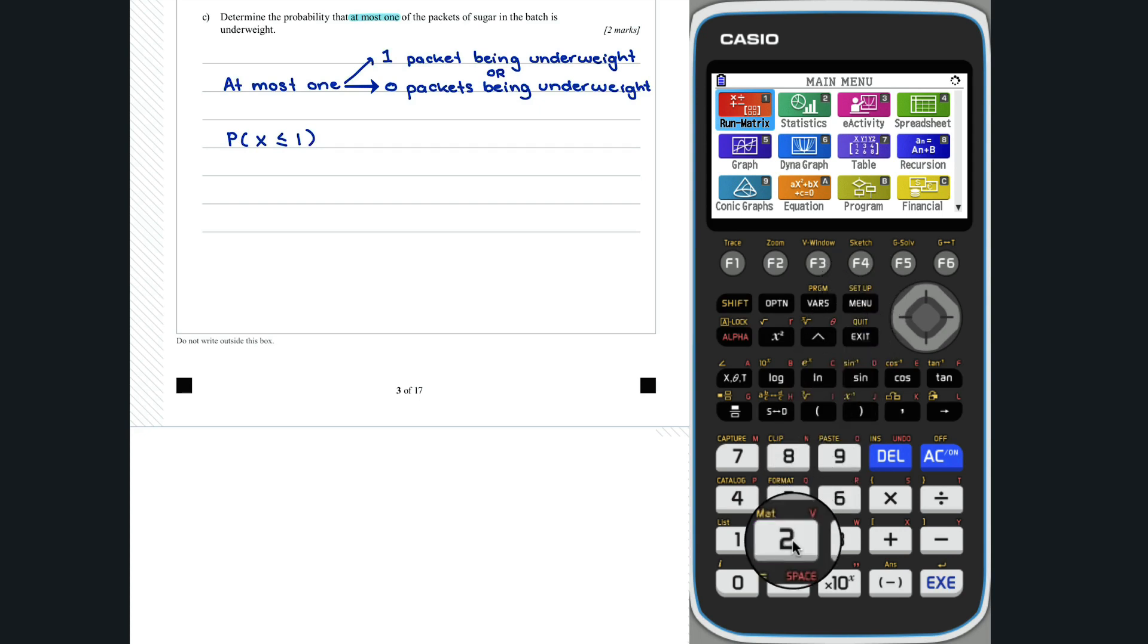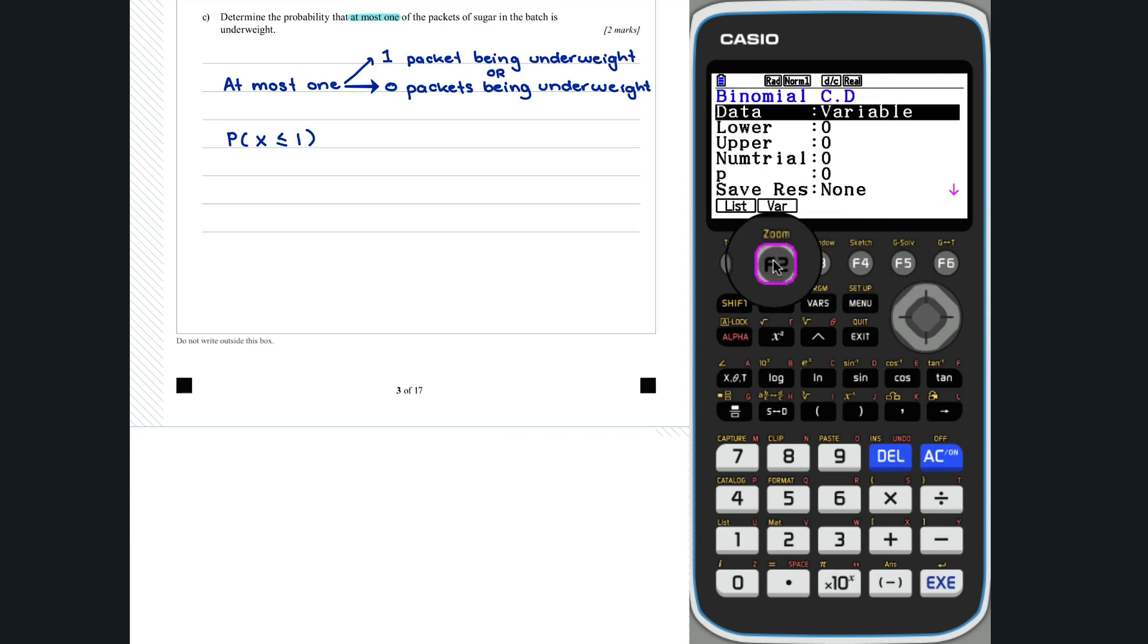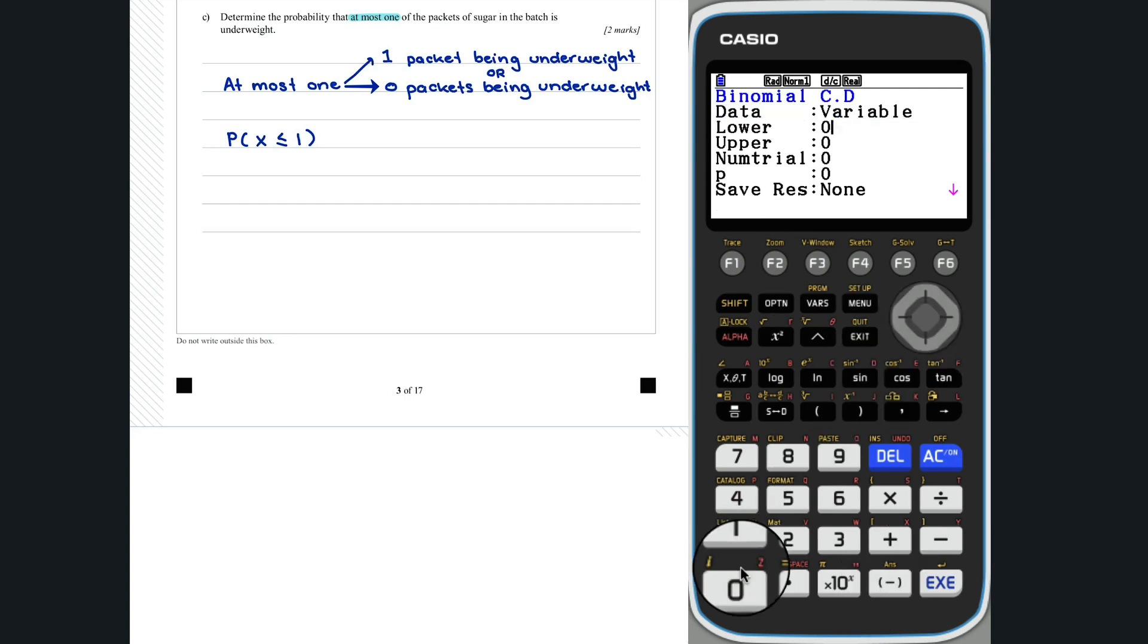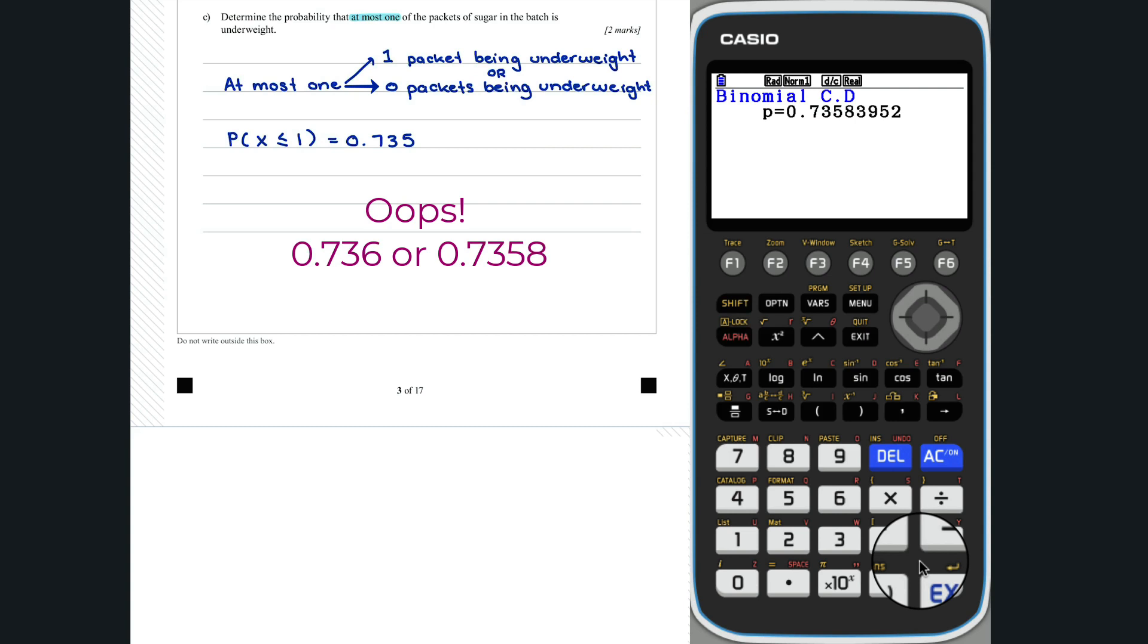Entering the statistics mode, we need to calculate a cumulative probability. So we will use bcd. Entering our values, we find that the probability that at most one of the sugar packets is underweight is 0.735.